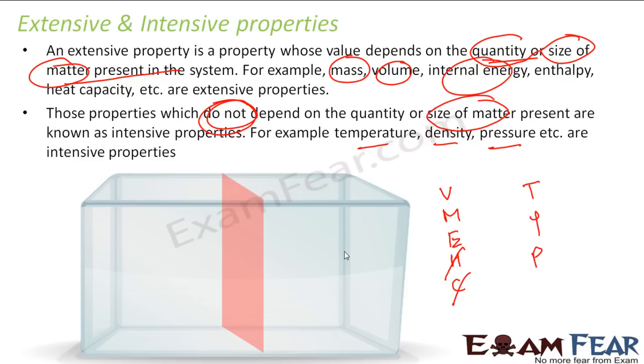What if we divide this into two different sections? Now if you see, the volume of this will be V by 2 and this will be V by 2. The volume has changed. The mass, this will be M by 2, this will be M by 2. The energy will also be divided.